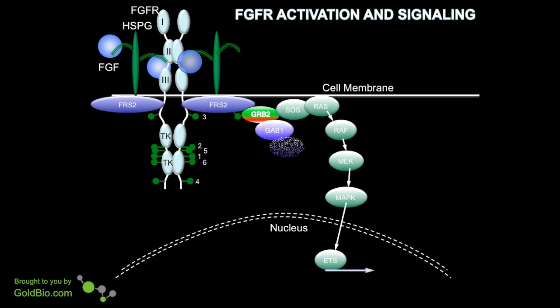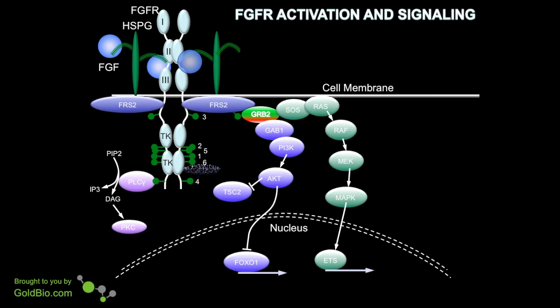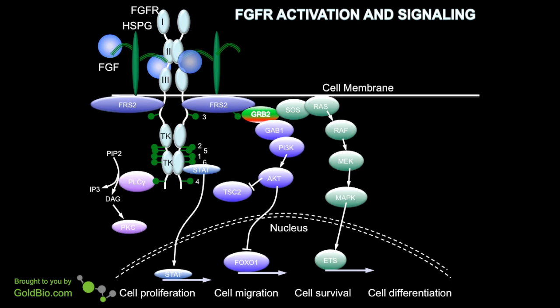GRAB2 also interacts with GAB1, which activates the PI3 kinase AKT pathway. Phospholipase C gamma interacts with the phosphorylated FGF receptor, activating its signaling pathway. And the STAT transcription factor also interacts with the FGF receptor, activating STAT signaling. All of these signaling pathways result in the regulation of cell proliferation, cell migration, cell survival, and cell differentiation.